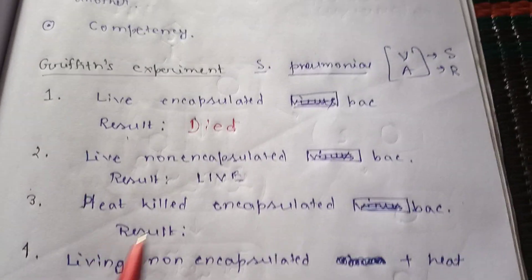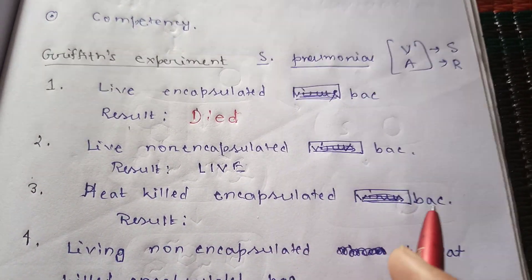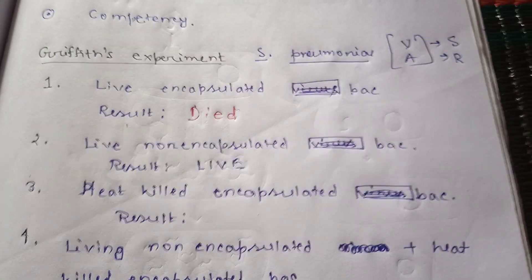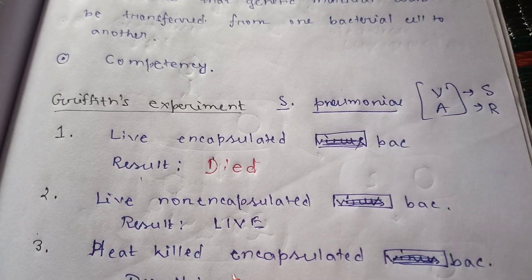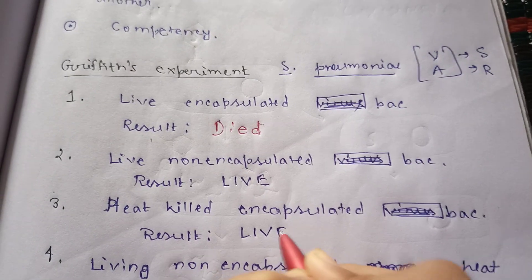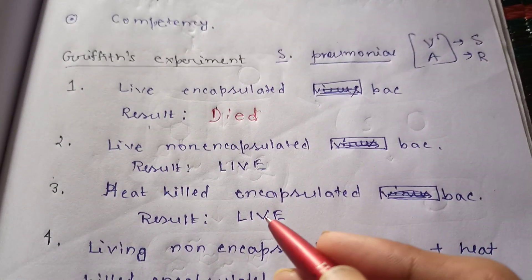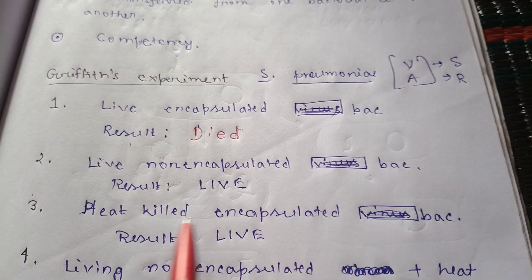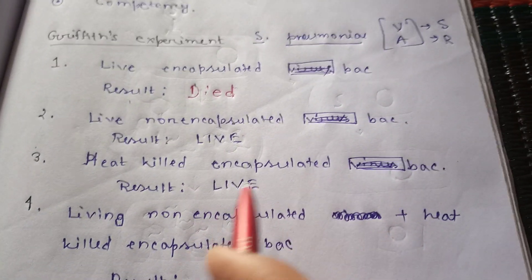In the third step, heat-killed encapsulated bacteria were injected into the mouse. The mouse remained healthy and alive. This is also expected because the bacteria were already killed before injection.